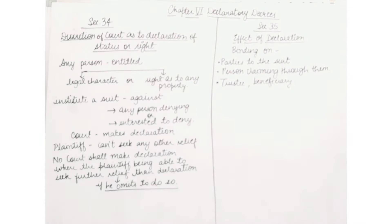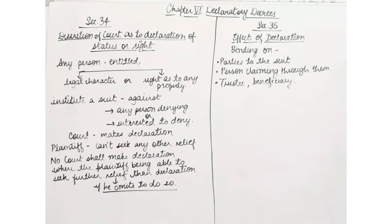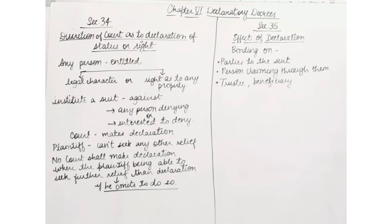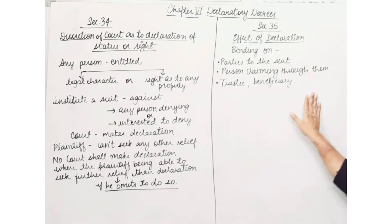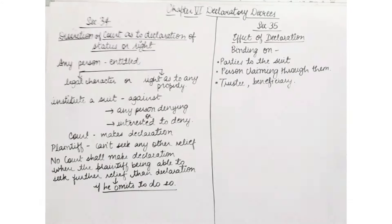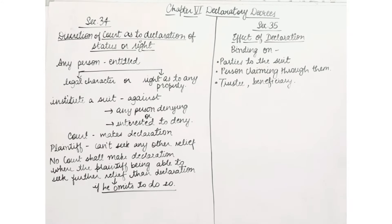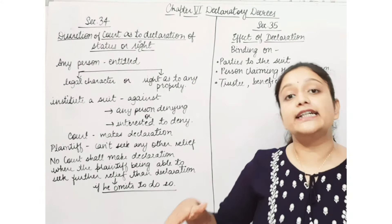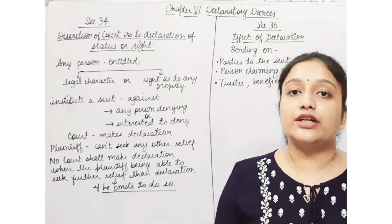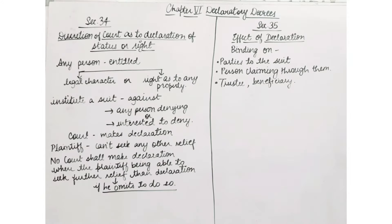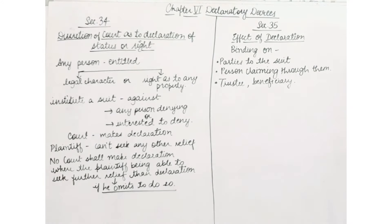Section 35 talks about the effect of declaration. What is binding? The declaration is binding on the parties to the suit. It is also binding on any person claiming through them — that is, whoever claims through the party as a legal heir. And if there is any trustee or beneficiary, they will also be bound by the declaration.